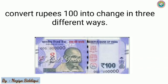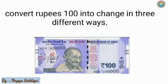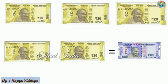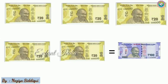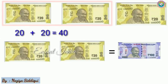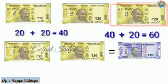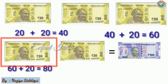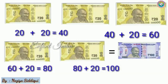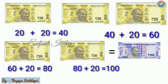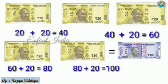Now look at this: convert 100 rupees into change in 3 different ways. We have to convert 100 rupees in 3 different ways. First, we will take 20 rupee notes. How many 20 rupee notes will make 100 rupees? 20+20=40, 40+20=60, 60+20=80, 80+20=100. Counting them: 1, 2, 3, 4 and 5. That means 5 Rs.20 notes will make Rs.100. This is one way.